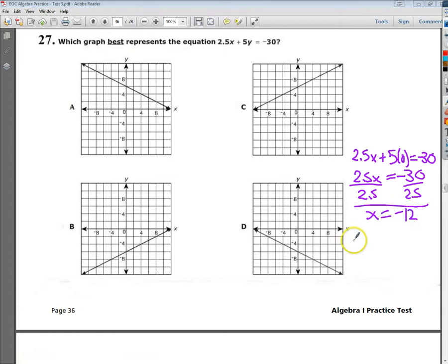And to get the y, I do the exact opposite. So 2.5 times 0 plus 5y equals negative 30. In this case, I'd be left with 5y equals negative 30. Divide by 5 on both sides. That's supposed to be a 30, not a 36. So I end up with negative 6.